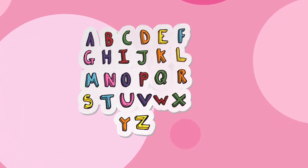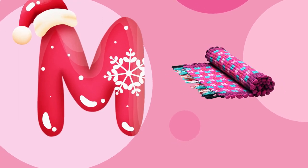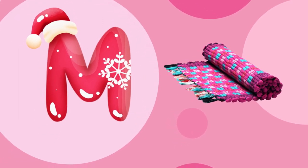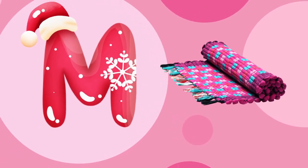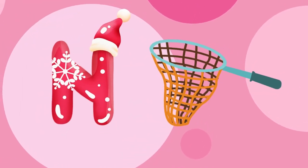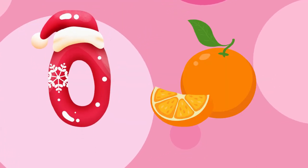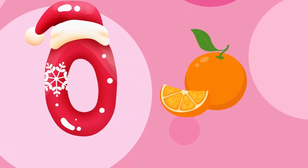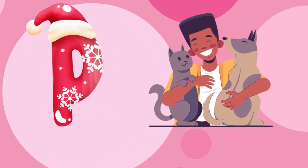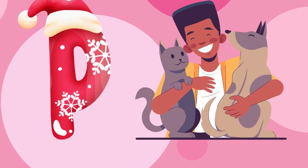M is for mat, m-m-mat. N is for net, n-n-net. O is for orange, o-o-orange. P is for pet, p-p-pet.